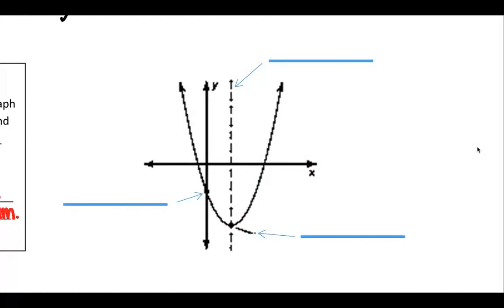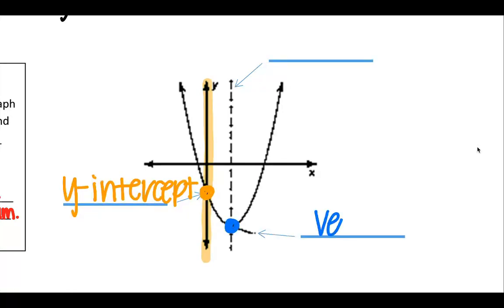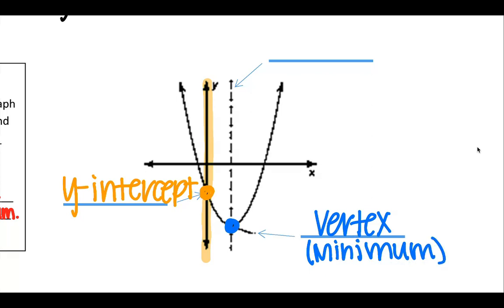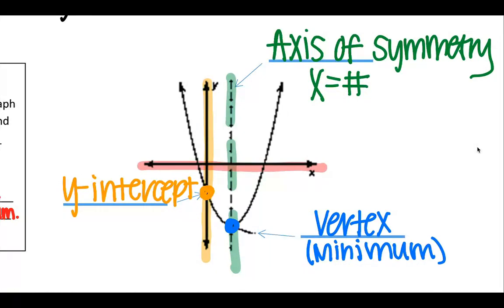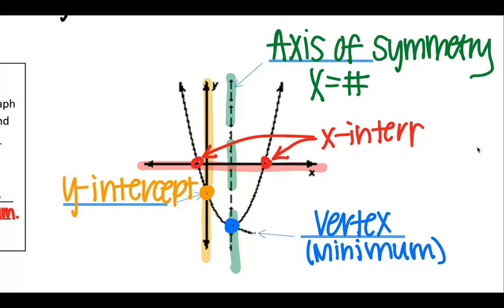If we look at this graph, we have our y-intercept — that's where it crosses the y-axis, right here. We have our vertex; since it's opening upward, we've got a low point, so this would be a minimum. If it were upside down, it would be a maximum. Straight through the middle of that vertex, we have the axis of symmetry, which is x equals a number — we get that number from the vertex. We also have x-intercepts, where it crosses the x-axis. We can have no x-intercepts, one, or two.